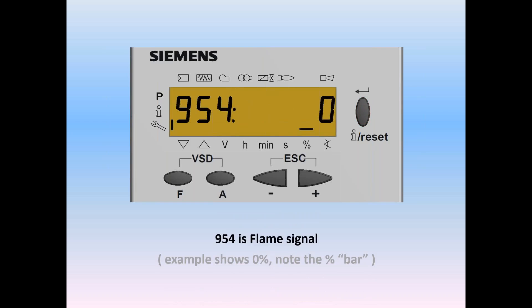The first thing you'll see on your screen is 954 flashing. Notice that on the left, the little wrench has a bar indicating we're at the service level. The parameter is 954 and the value is 0. There's also a bar above the percent sign telling us we're getting a 0% flame signal, because the burner shut down.